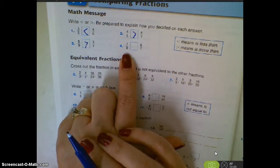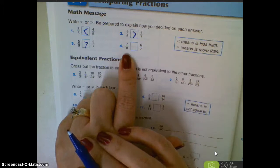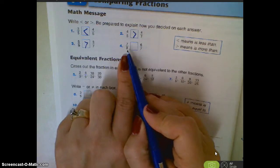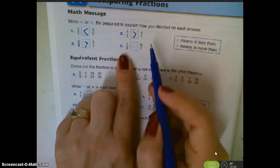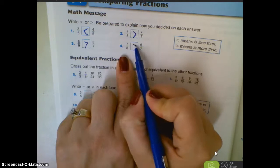Lots of times with this one, kids will think about the part that's missing. Okay, so if you have it sliced into eight slices, and your part that's missing is one-eighth of it, and then the part that's missing over here is one-seventh, we know that this one would be bigger.